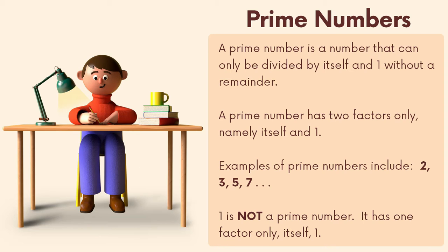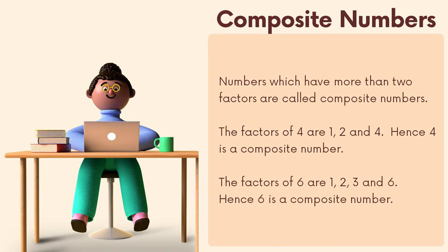Prime numbers: a prime number is a number that can only be divided by itself and one without a remainder. A prime number has exactly two factors — namely itself and one. Examples of prime numbers include two, three, five, and seven. One is not a prime number; it has only one factor, which is itself.